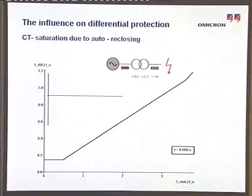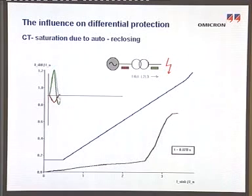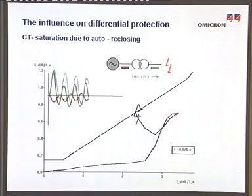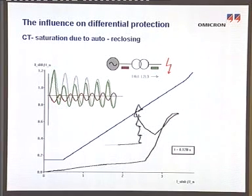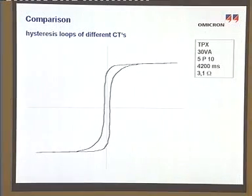If the relay behavior is also examined offline at re-closure, the simulation shows that the stabilizing characteristic is exceeded in the second area due to smaller stabilizing currents and considerably lower rise. Consequently, tripping of the differential protection is to be expected. Therefore, the iron-core CT does not meet the requirements for this specific application if it is supposed that the tripping characteristic cannot be set to be less sensitive.